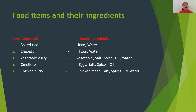Next, vegetable curry uses vegetables, salt, spices, oil, and water. In making an omelette, we require eggs, salt, spices, and oil. In making chicken curry, we require chicken meat, salt, spices, oil, and water.